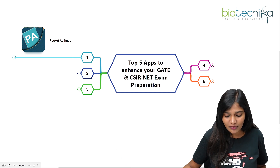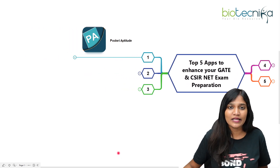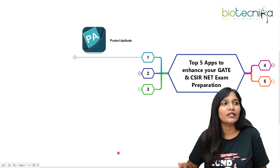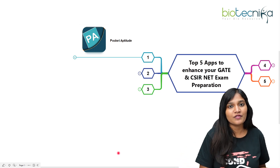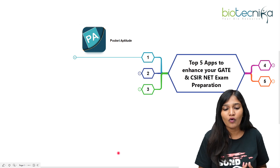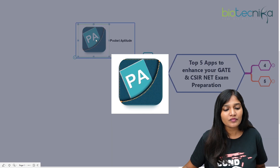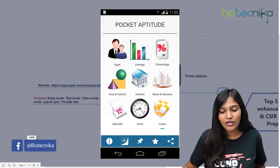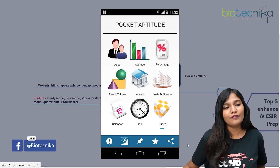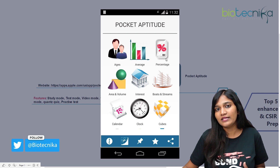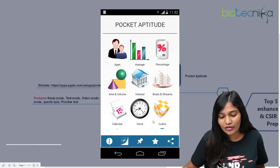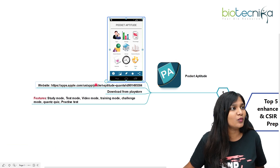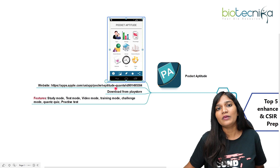The first one is going to be Pocket Aptitude. When we talk about CSAR net or gate examinations, of course, you need to have logical or aptitude skills. Most people focus a lot on the subject but spend very limited time on aptitude. So to make it easier for all of you, you can download Pocket Aptitude. This app is very good — you will find aptitude questions based on ages, average percentage, profit and loss, area volume, interest, calendar, clock, cubes, and many more types of questions. You can download it from the Play Store using the link provided.